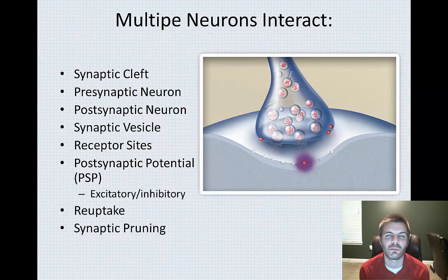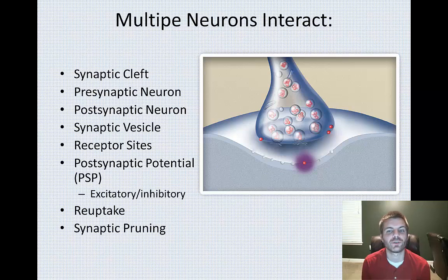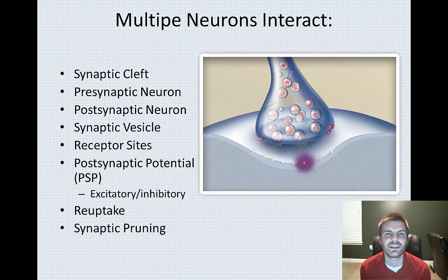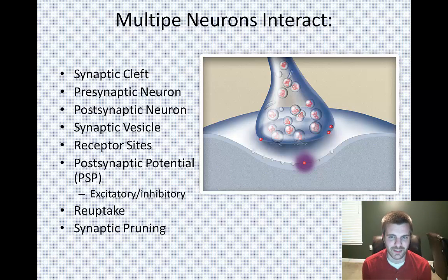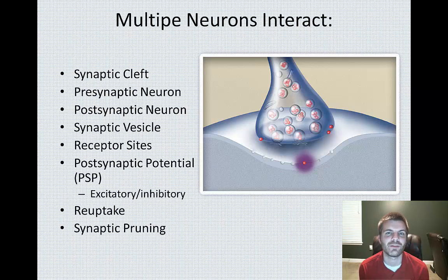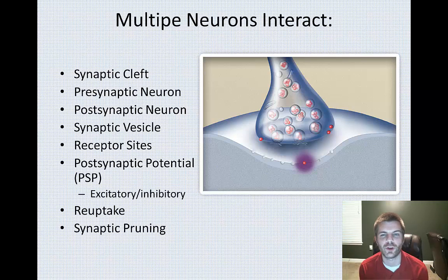Finally, we need to discuss how multiple neurons interact. There's a very small gap between where your neurons almost connect. If you look at this picture, the top section with all the little bubbles with red dots is a terminal button. Inside the terminal button there are synaptic vesicles — the bubble-like substances that hold specific neurotransmitters such as acetylcholine, norepinephrine, or dopamine. The purpose of those is to get pushed out the end of the terminal button and release those neurotransmitters.